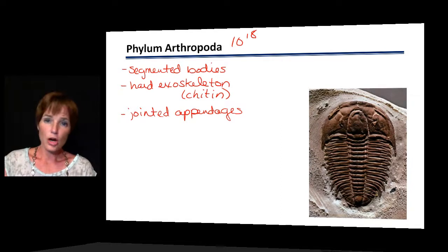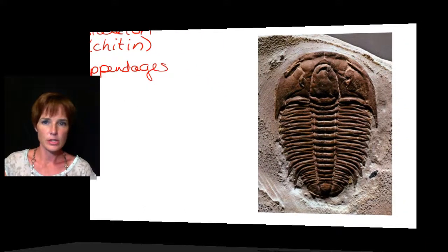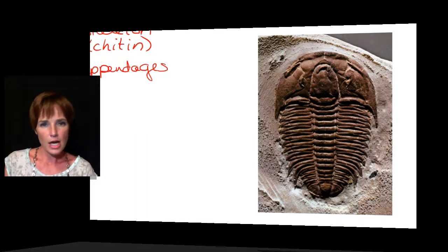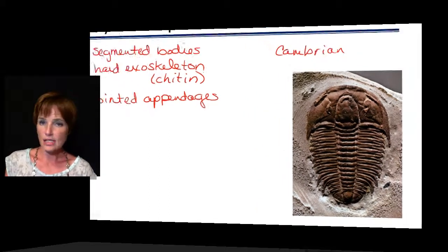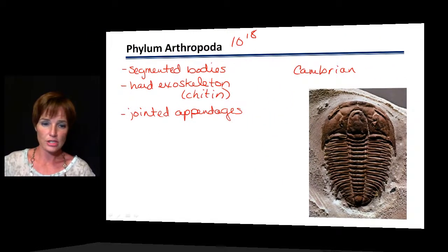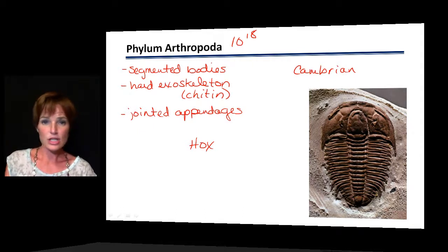Arthropod fossils first appeared during the Cambrian period, and early arthropods had many segments. Over time, those segments became fused together, resulting in fewer segments. This was largely driven by Hox genes involved in segmentation determination, allowing different body regions to become specialized for different activities.